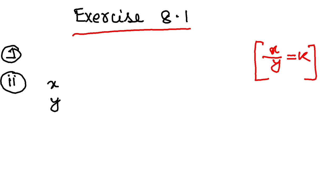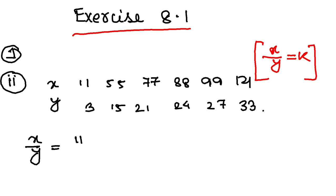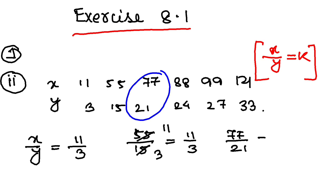Let us write the list first. The x values are 11, 55, 77, 88, 99, 121. The y values are 3, 15, 21, 24, 27, and 33. Now I will compare x by y. First, 11 by 3. Second, according to my x by y law, 55 by 15, which cancels to 11 by 3. Next, 77 by 21, which is also 11 by 3.